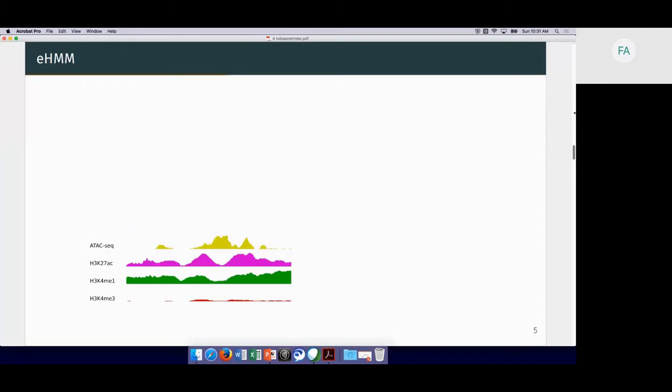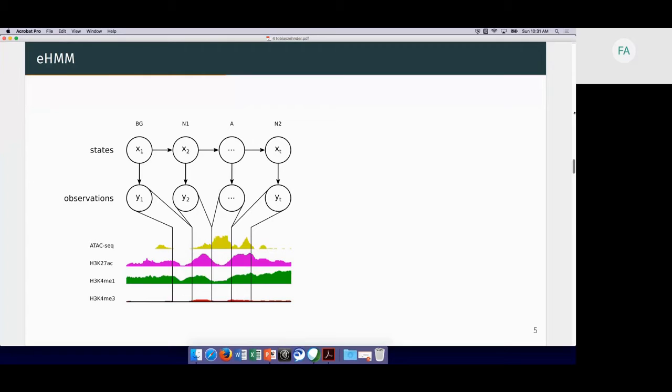So how does the method work? We called it eHMM, which stands for enhancer Hidden Markov Model. What it basically does is that for certain regions of interest, we use these four features: the three histone modifications that I talked about before and additionally ATAC-seq that gives us information about chromatin accessibility. Then we bin these regions in 100 base pair bins where at each point we have a four-dimensional feature vector, and for a certain region of interest we have a sequence of observations.